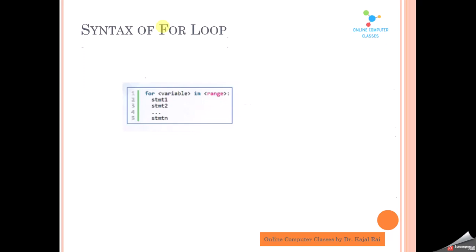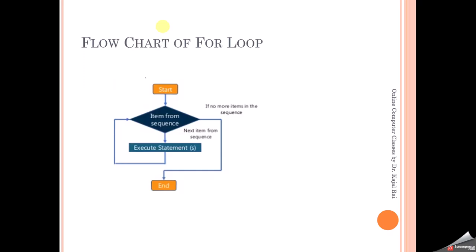This is the syntax for the for loop. And this is the flowchart of the for loop, where start is where you begin the loop. Then item for sequence — if there are more items or more statements to repeat, then the condition is not yet satisfied, and you execute the statements. If the condition is false, then the end is reached. This is the flowchart.